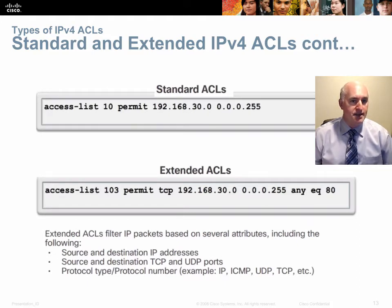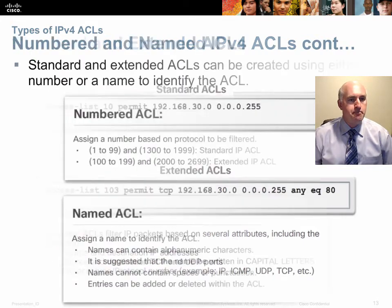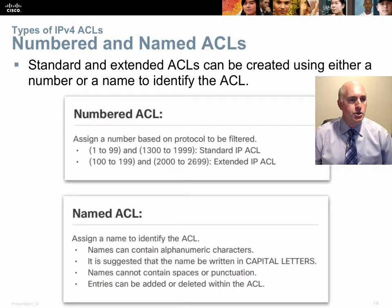Here's a comparison example. A standard ACL at the top is permitting anything from 192.168.30.0. The extended ACL below does the same thing but limits it to port 80, so anything from 192.168.30.0 is permitted only if it's port 80 — port 21 or 22 would not match.